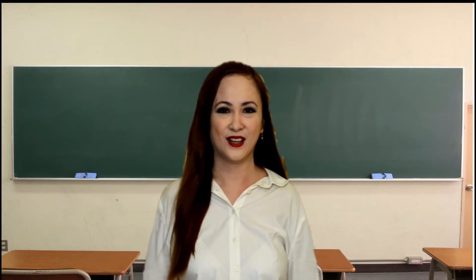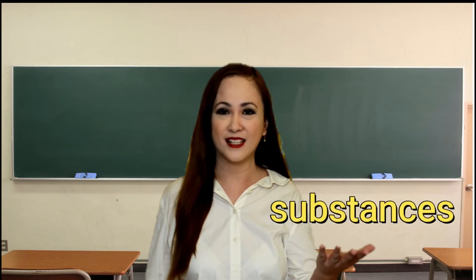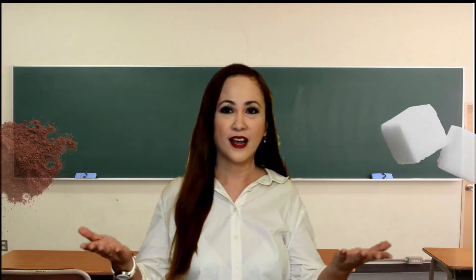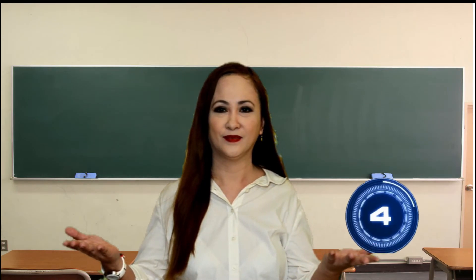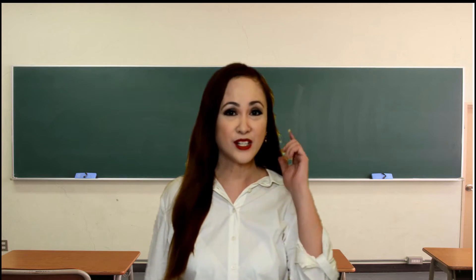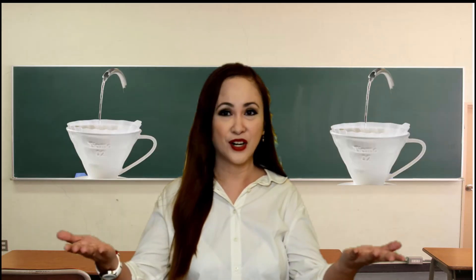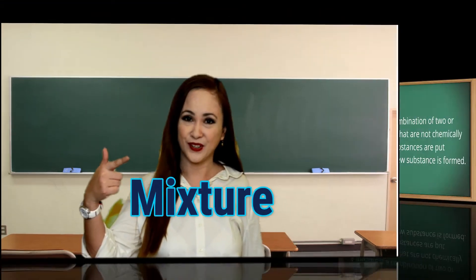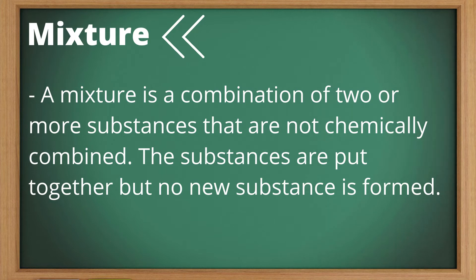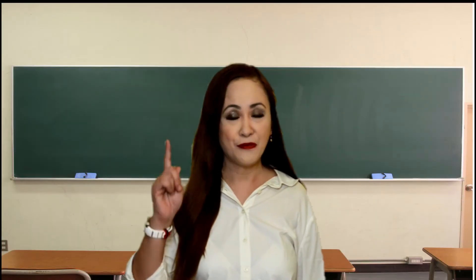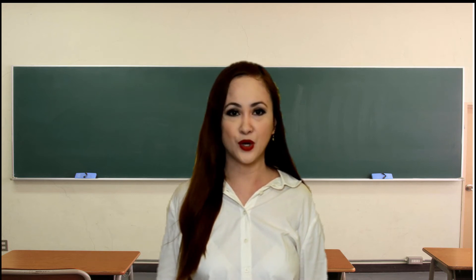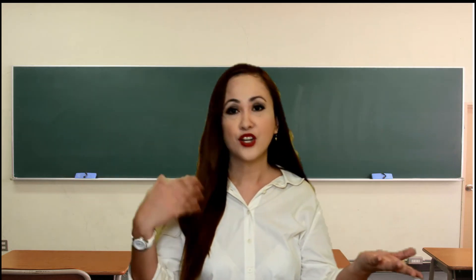What is formed when two or more substances like coffee, sugar, and water are mixed together? When you mix coffee powder, sugar, and water, you form a mixture. A mixture is a combination of two or more substances that are not chemically combined. The substances are put together but no new substance is formed.